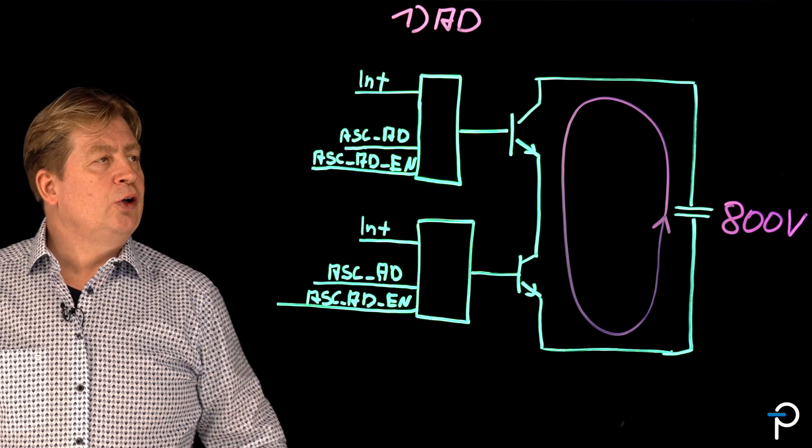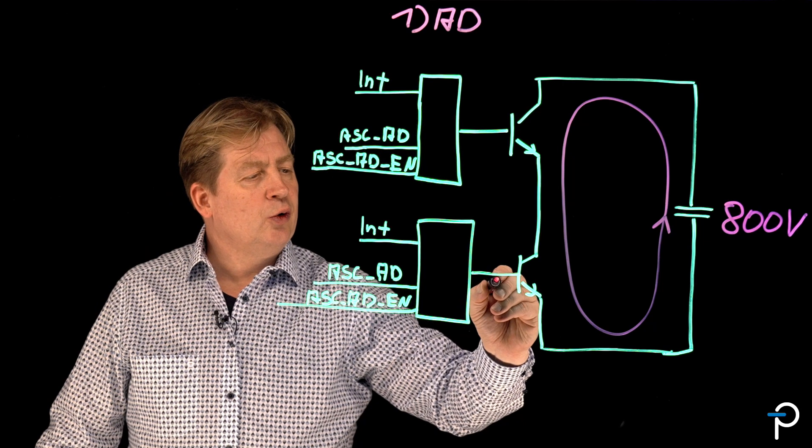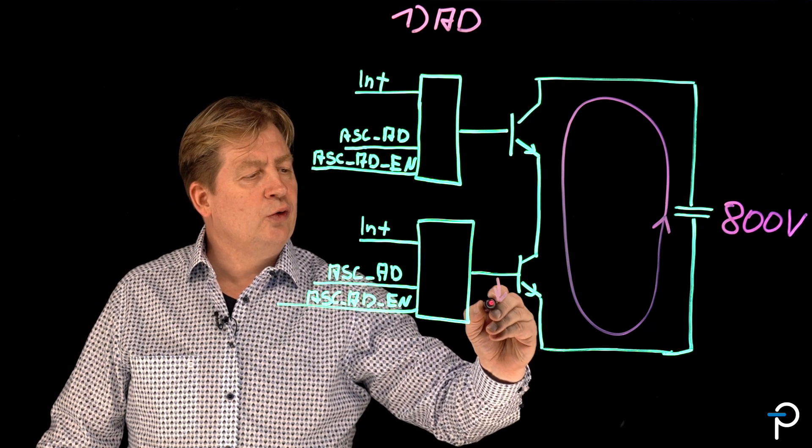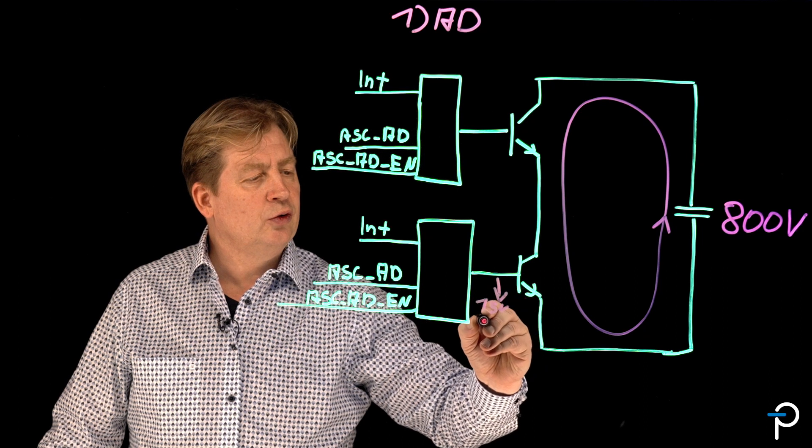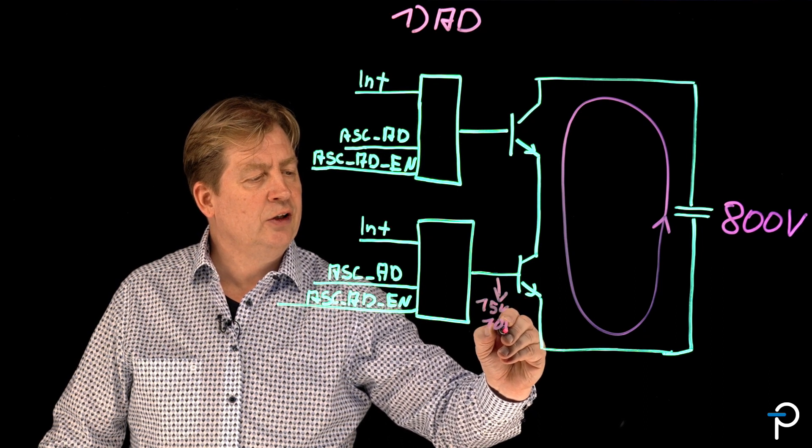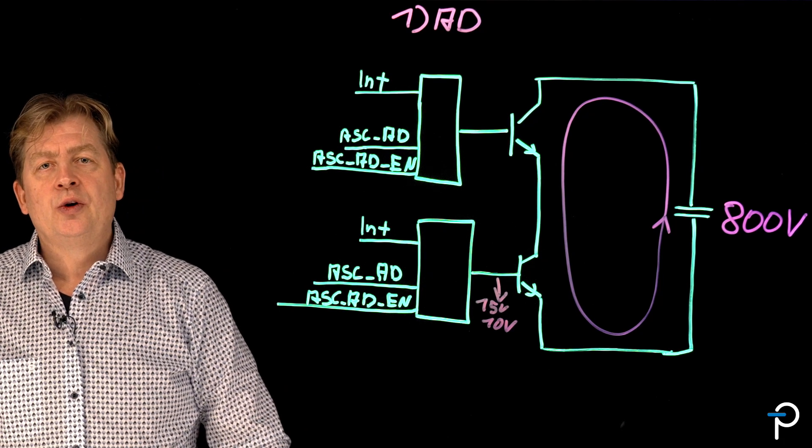To avoid a short circuit between the top and the bottom, we are reducing the gate turn on voltage from 15 volt to 10 volt, actively controlled by the Scale EV automotive gate driver.